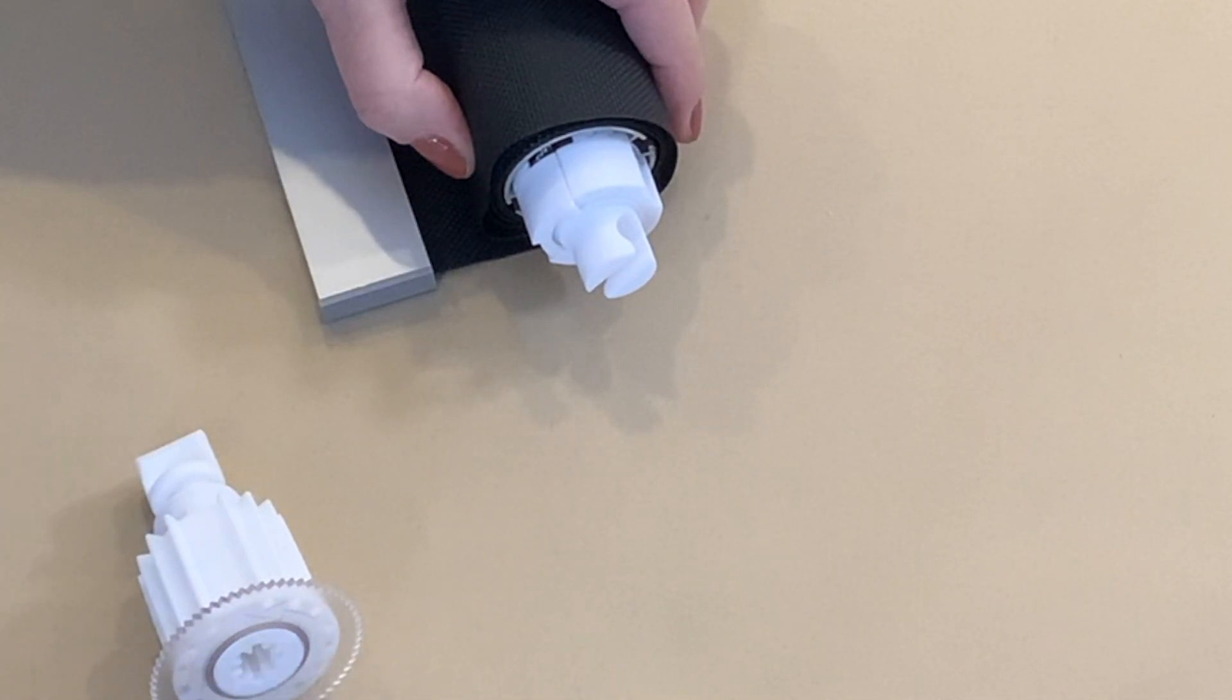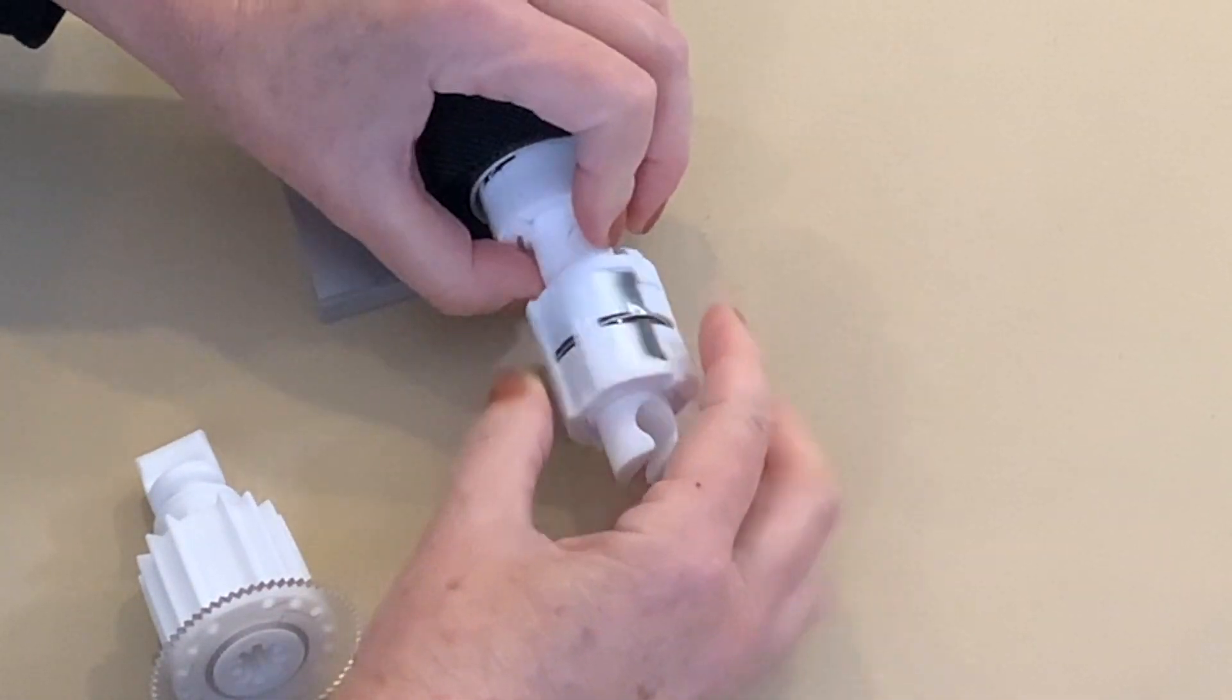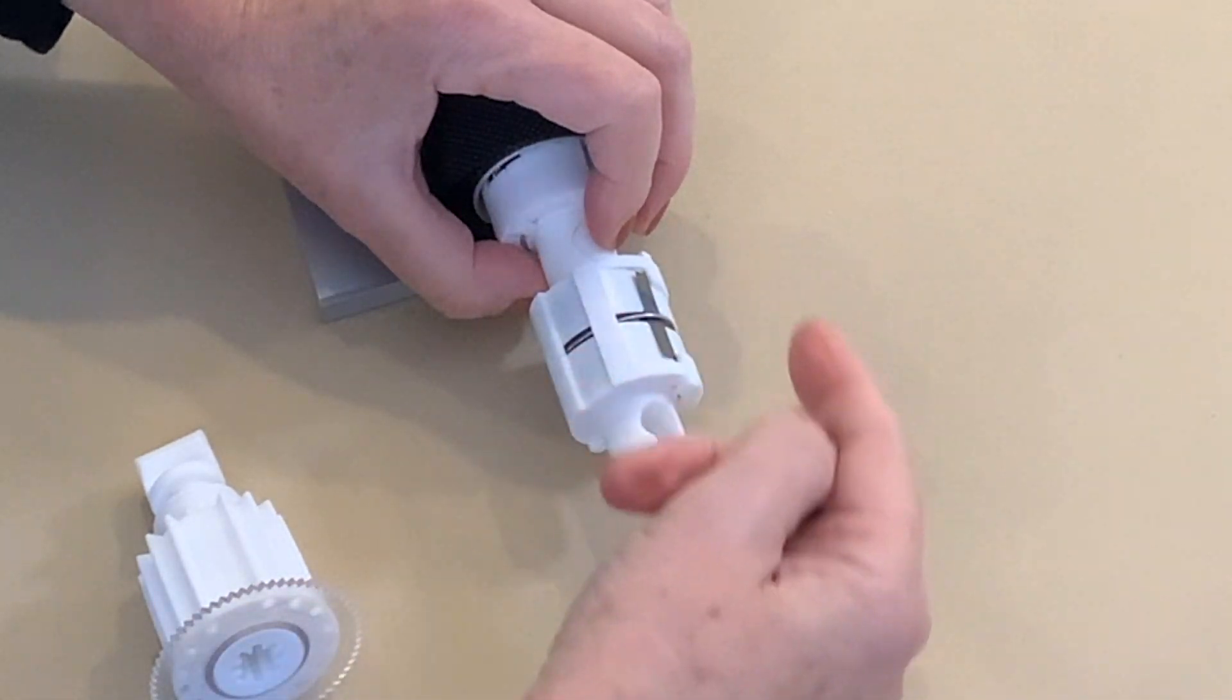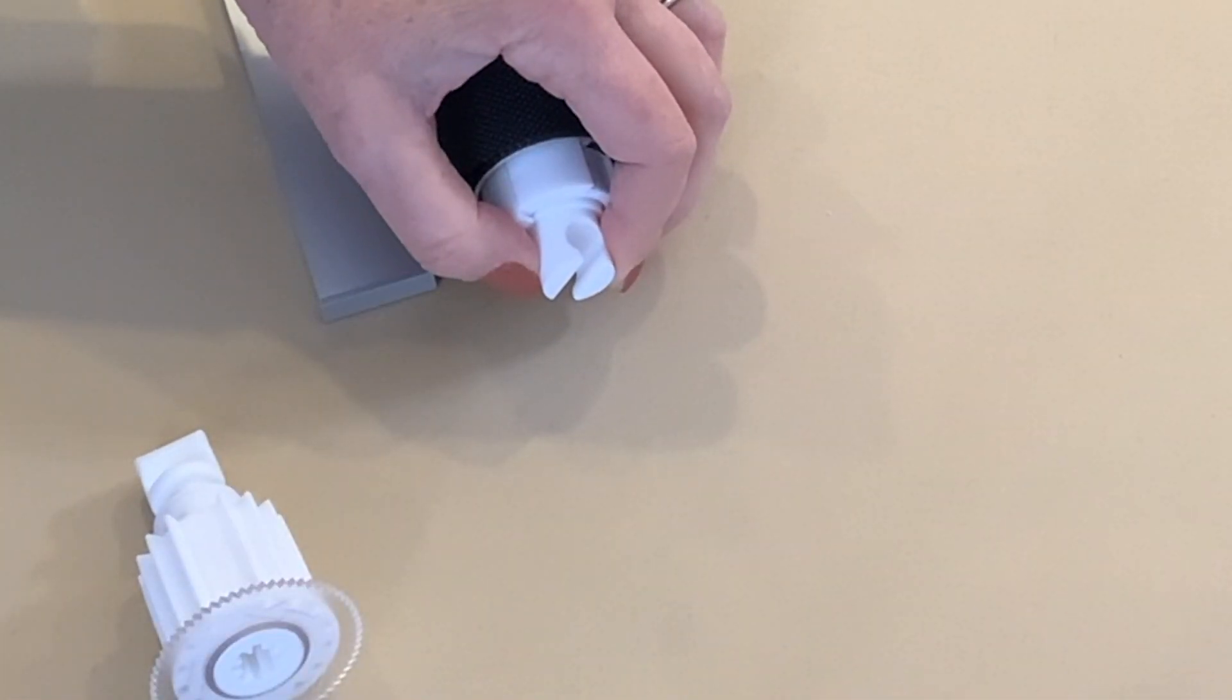Now if this was a large shade, I could add an additional spring unit. Do the same thing. Tighten it three turns. And then keep going. But I'm going to take this off. We only need one spring for this shade.